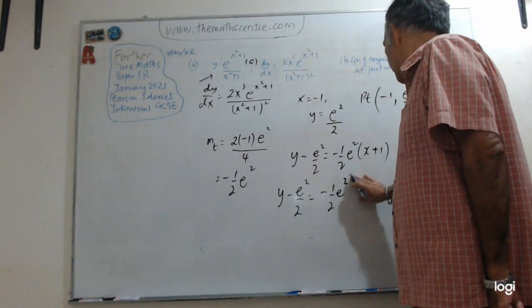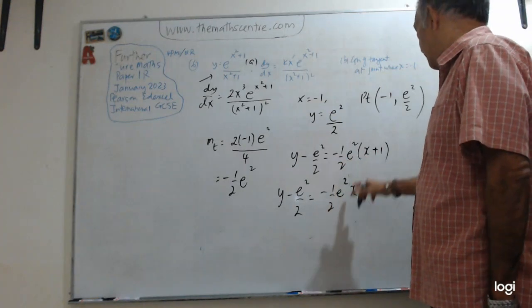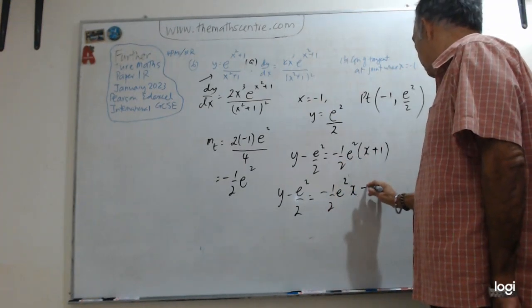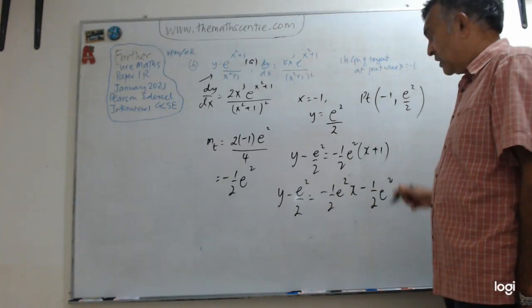E squared x. This is e squared over 2. Minus 1 half e squared x. And then I have minus 1 half e squared. Just open this up. That's good. So this is gone.